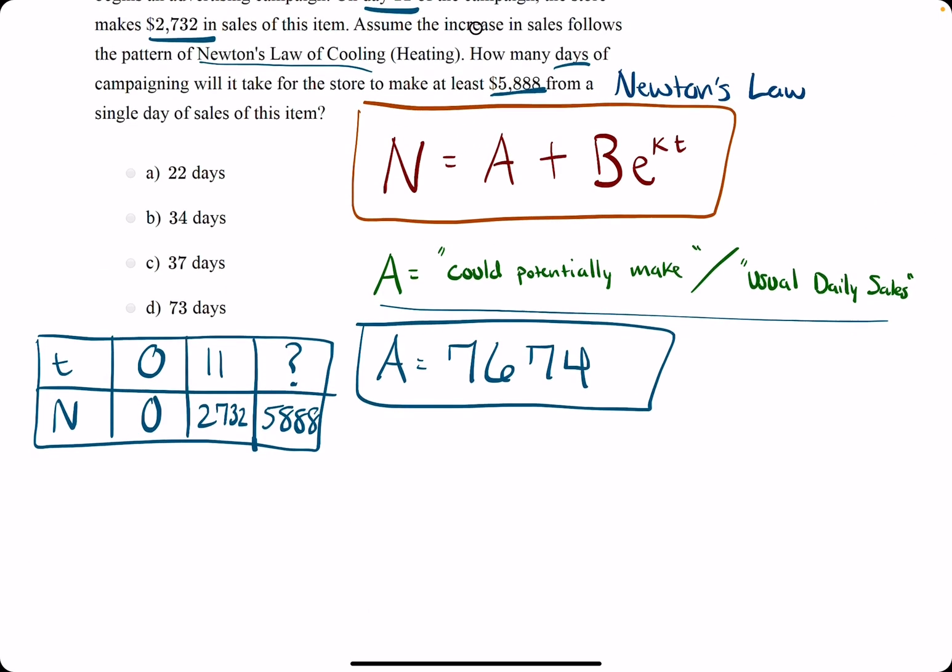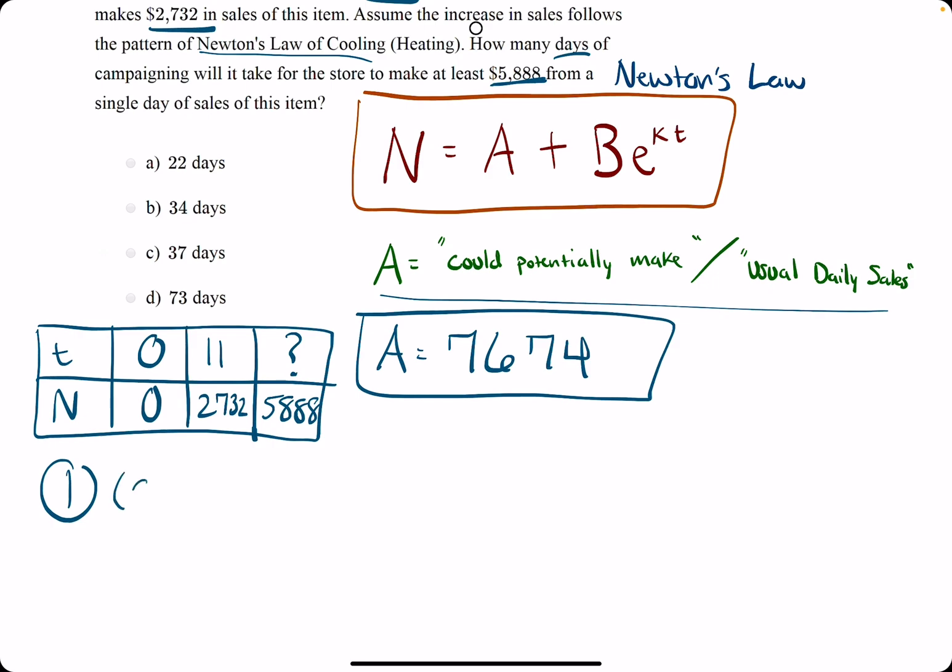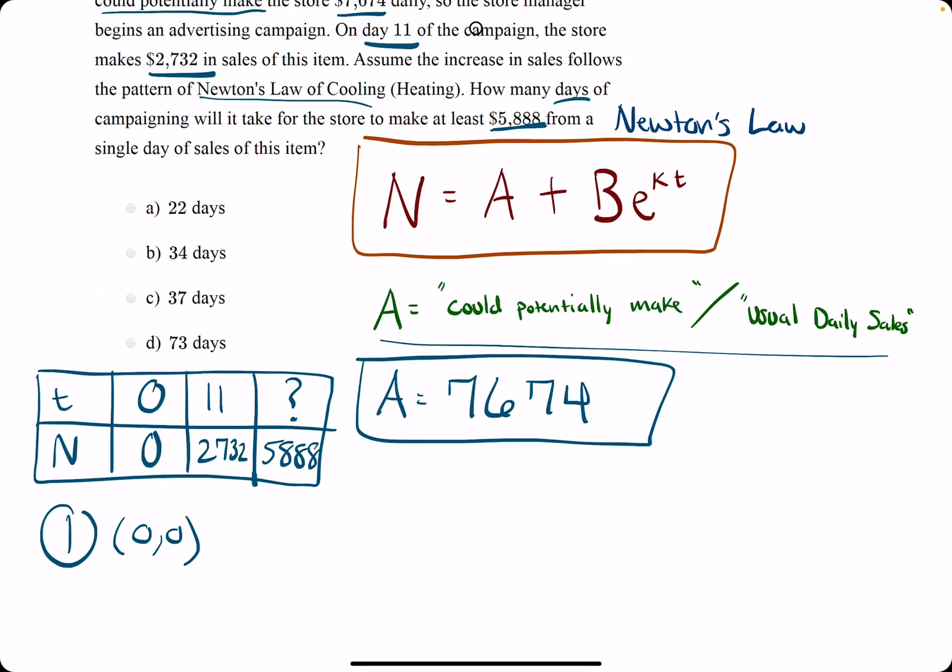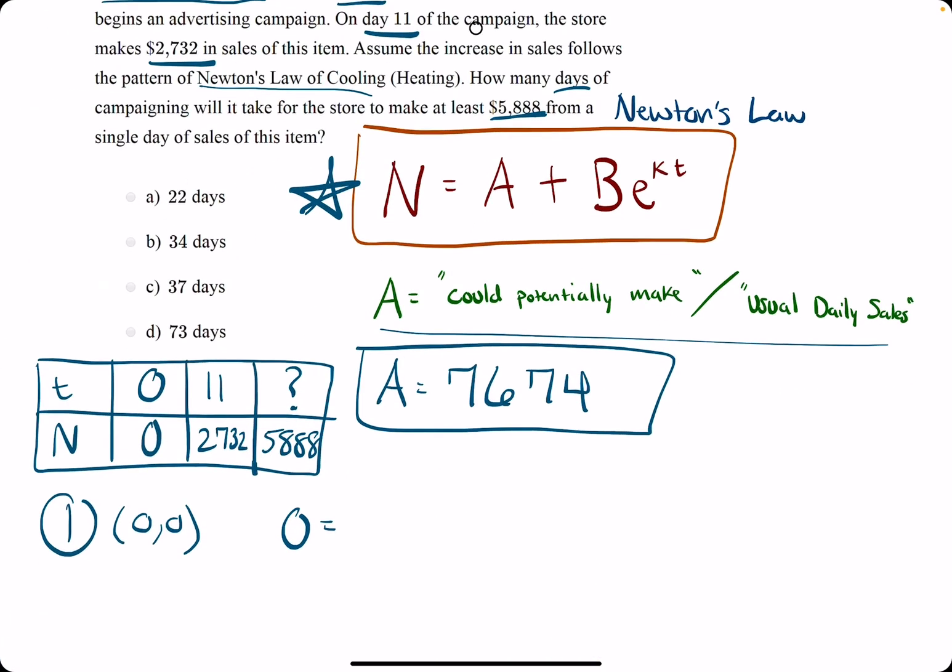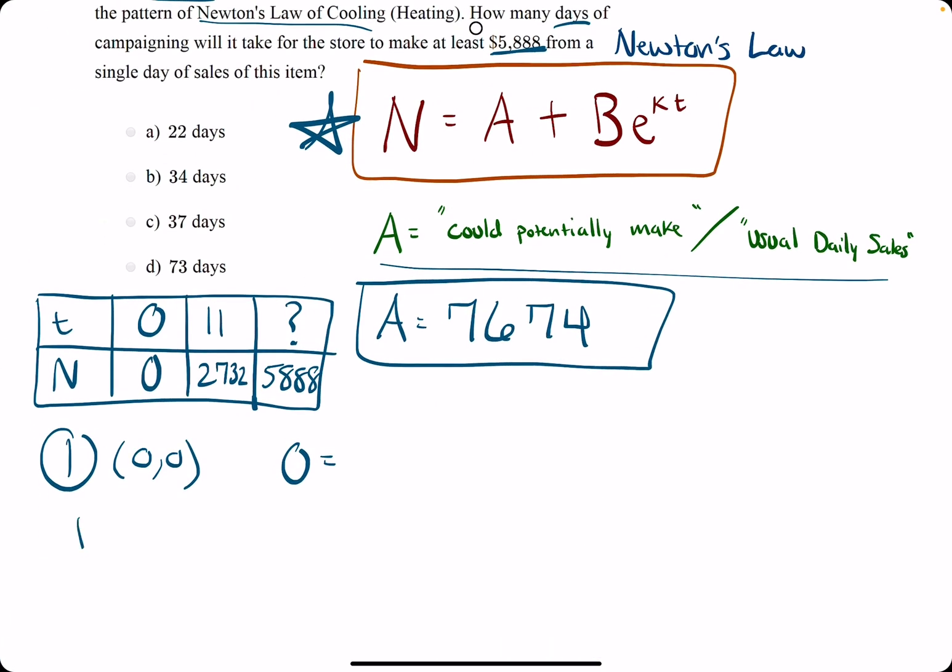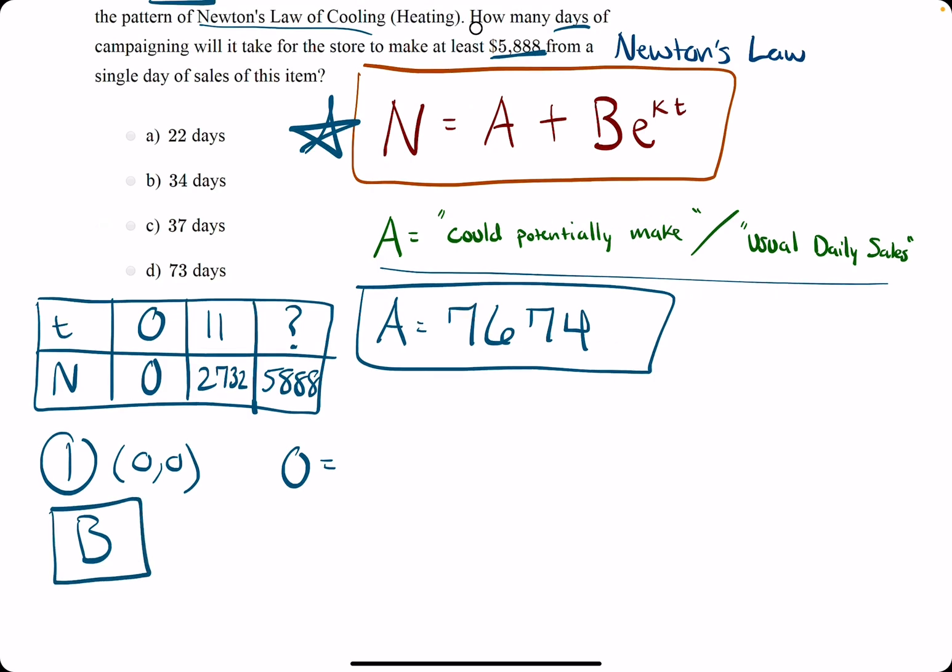They say how many days will it take for them to make $5,888 in daily sales. The first step is using the (0, 0) ordered pair, or T and N pair, plugging them into Newton's Law equation and solving for B. We get zero—our N value—equals the A value, 7674, plus B times E to the K times zero. K times zero is zero, but E to the zero is one, because anything to the zero is one.